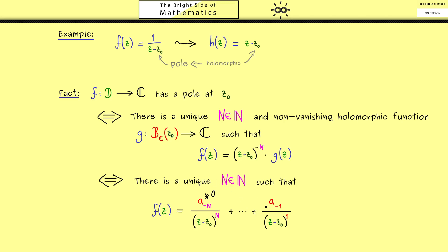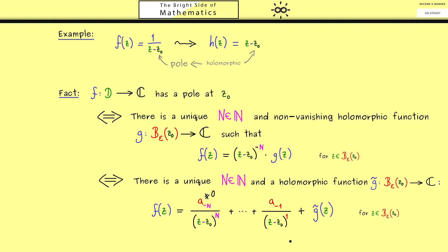The coefficient a_{−1} corresponding to the power −1 in the Laurent series is the residue. The remaining terms form a normal power series, which we can write as a holomorphic function g-tilde. All these equivalences follow immediately from the power series — or Taylor — expansions that all holomorphic functions possess, allowing us to characterize the order of a given pole.